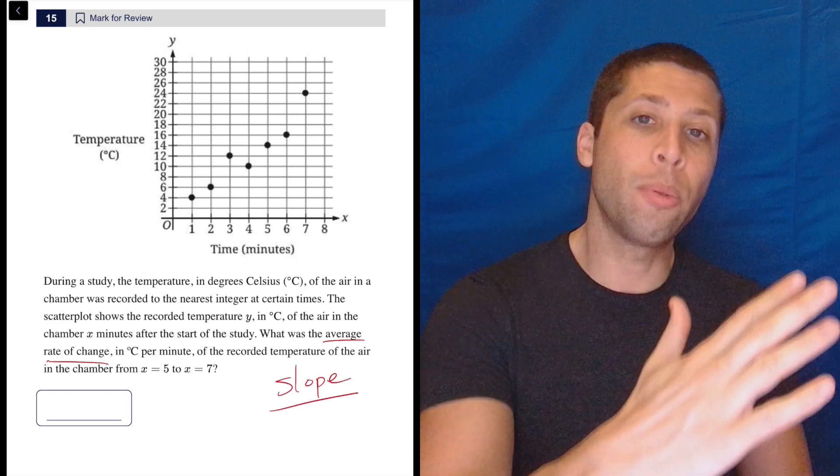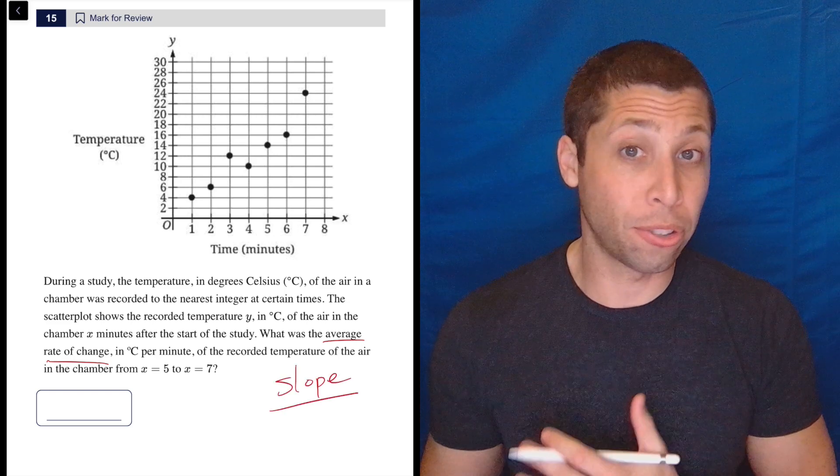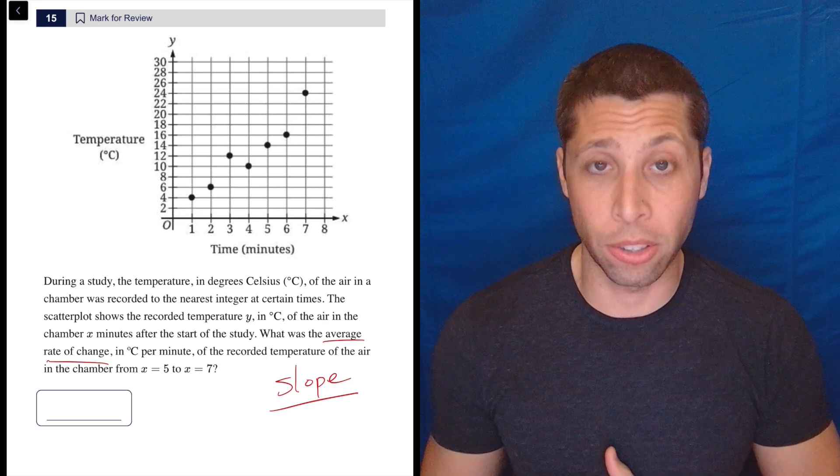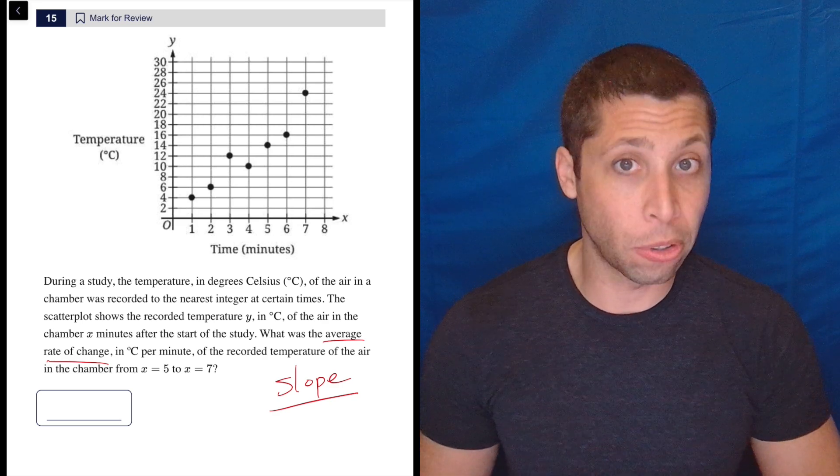Now, since it's not a continuous line, they're not asking for the slope of the overall line of best fit. They're specifying which points for us to use, but we're just going to use the normal slope formula.